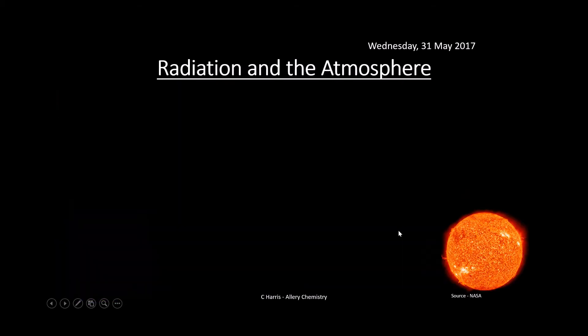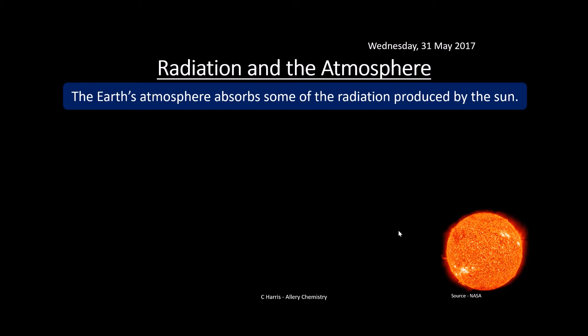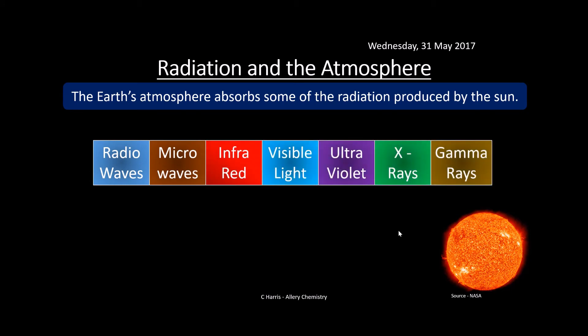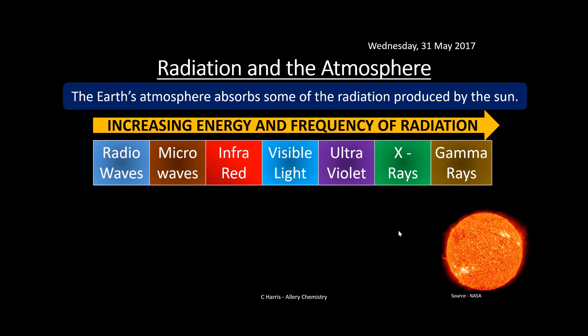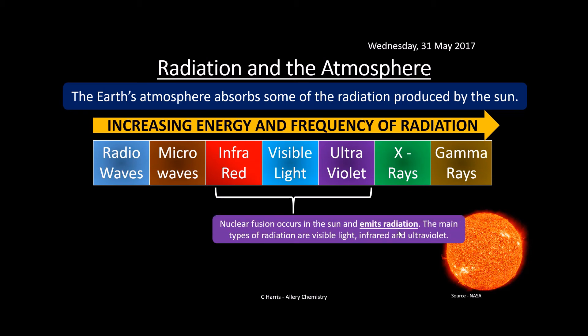Radiation in the atmosphere — the Earth's atmosphere absorbs some of the radiation produced by the sun. Looking at the EM spectrum, we go from radio waves at one end to gamma rays at the other, with increasing energy and frequency and shorter wavelength. Nuclear fusion in the sun emits radiation in the infrared, visible light, and ultraviolet range. We feel the warmth of the sun as infrared, see it as visible light, and the ultraviolet — the invisible UV light — is what causes burning on the skin.